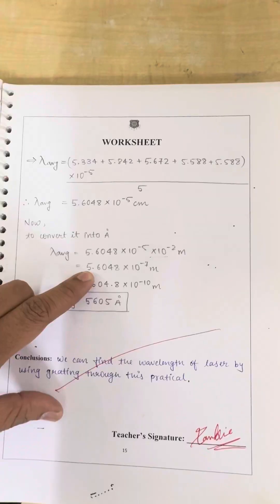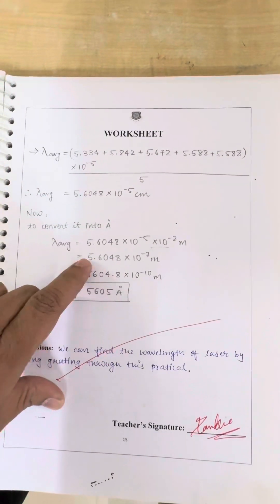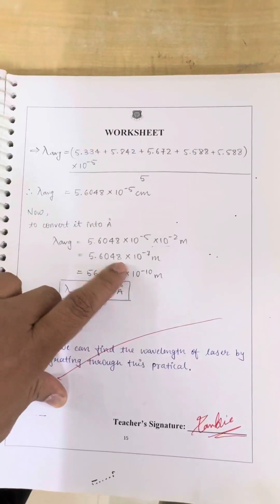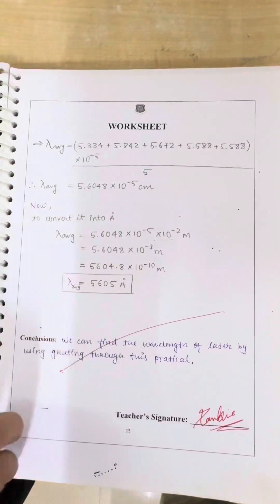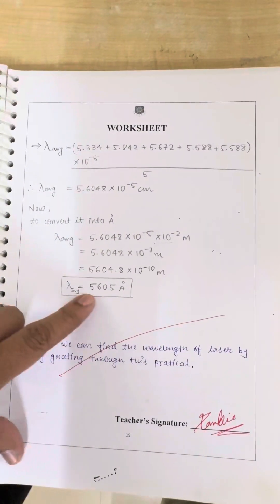So it will be 5604.8 into 10 to the minus 10. And 10 to the minus 10 meter is nothing but the angstrom.